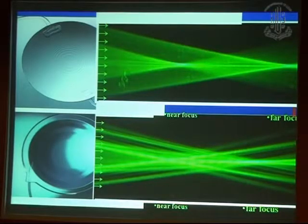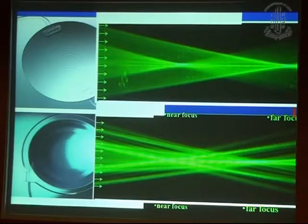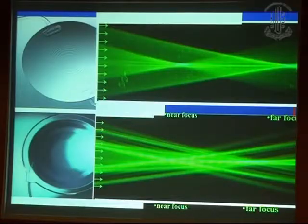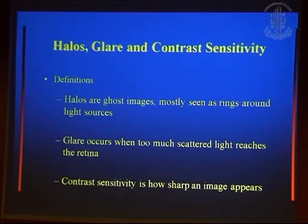This is how the diffractive lenses work — they have got 2 sharp focuses, one for near and one for distance. These are the multifocal focuses for diffractive. The first type is diffractive and the second is refractive. These are the problems which are there with light loss.